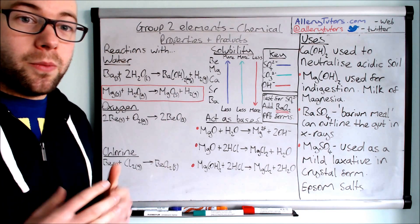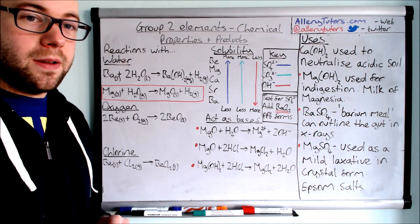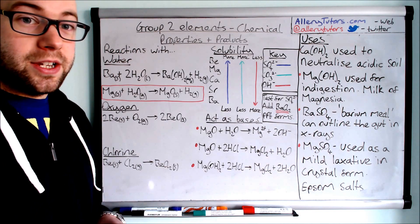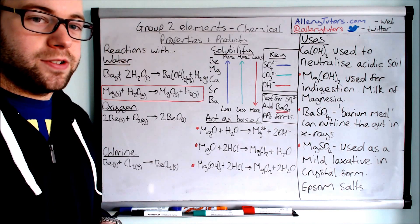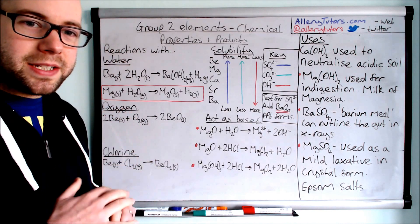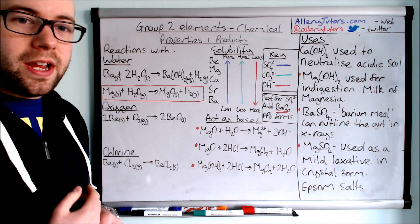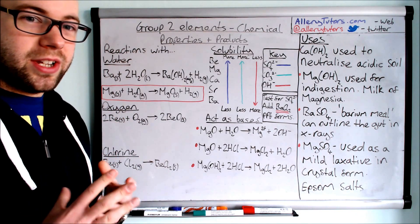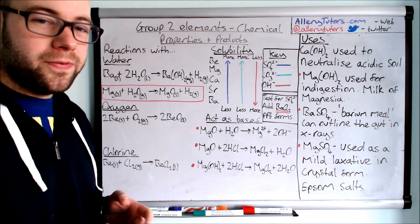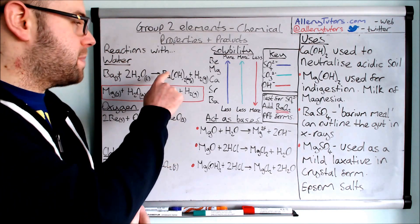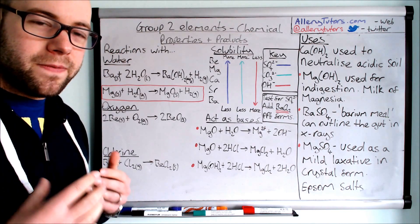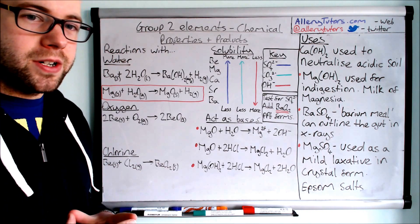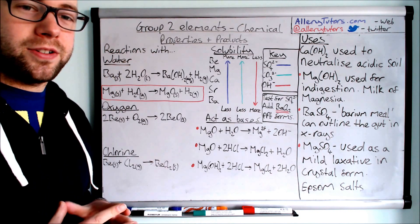Hydrogen gas is given off, and you can test for that by putting a lighted splint next to it — you should get a squeaky pop because of the hydrogen. There is a slight exception: magnesium. If we take solid magnesium and react it with cold water, you would form only a small amount of magnesium hydroxide and hydrogen. Magnesium is very unreactive, being near the top of group 2, so it's a really slow reaction with water.